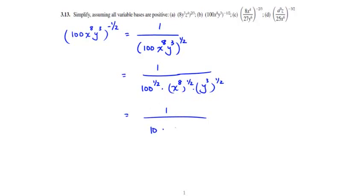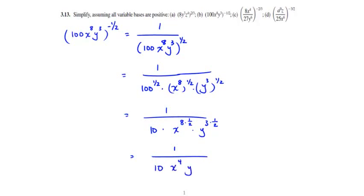x to the 8th raised to the 1/2 power simplifies by multiplying the exponents: x to the 8 times 1/2. Similarly, the y term is y raised to the 3 times 1/2 power. Simplifying completely, this gives 1 over 10, times x to the 4th, times y to the 3/2 power.